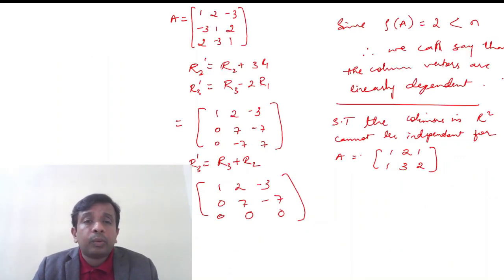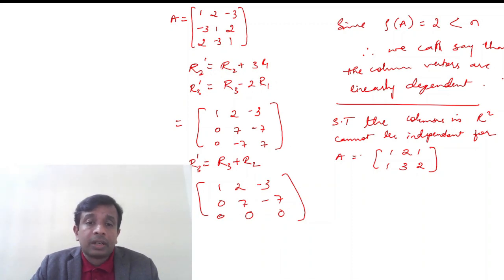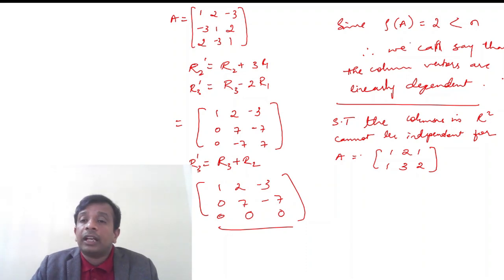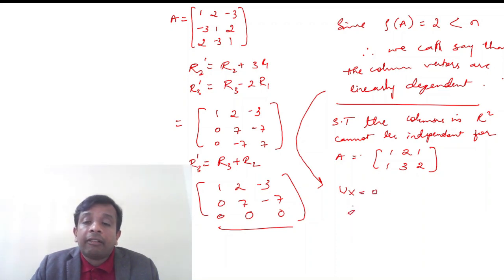For another example, A = [1 2 -3 / -3 1 2 / 2 -3 1] row-wise. Row operations R2' = R2 + 3*R1 and R3' = R3 - 2*R1 give 1 2 -3 / 0 7 -7 / 0 -7 7. Then R3' = R3 + R2 gives one row of all zeros, so rank = 2, which is less than the number of column vectors. Hence the column vectors are linearly dependent. Viewers are encouraged to try the Ux = 0 method to develop their own argument.